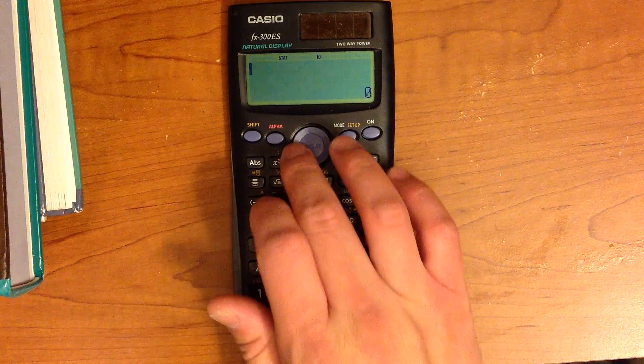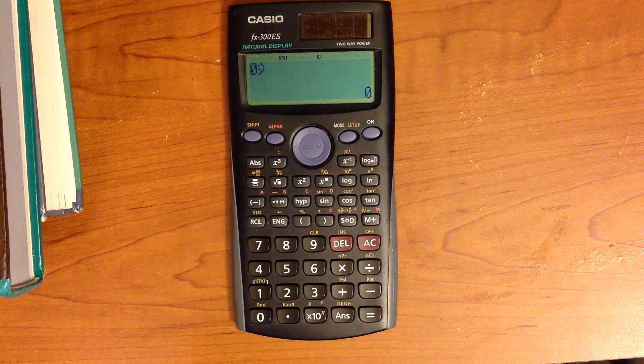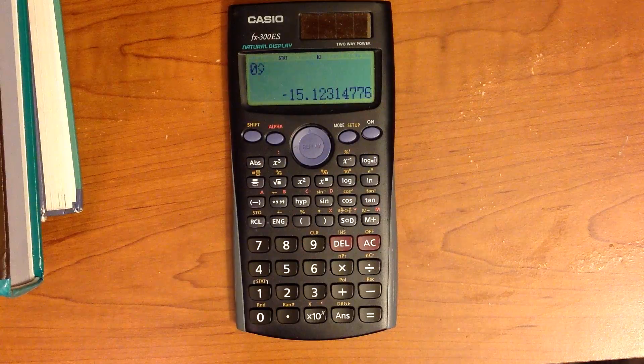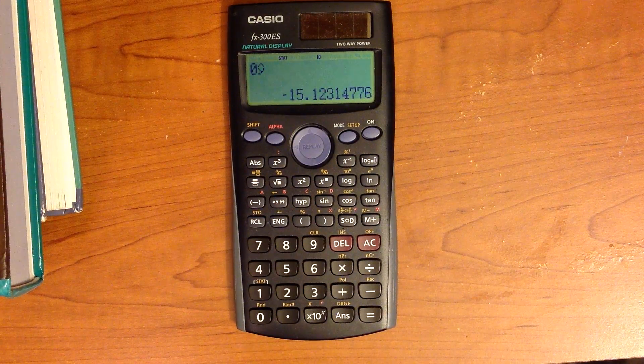Now what you can also do is just show that it works. If we put in 0, that should give us the Y-intercept of negative 15.1. So now you know how to do some basic linear regression on your Casio calculator.